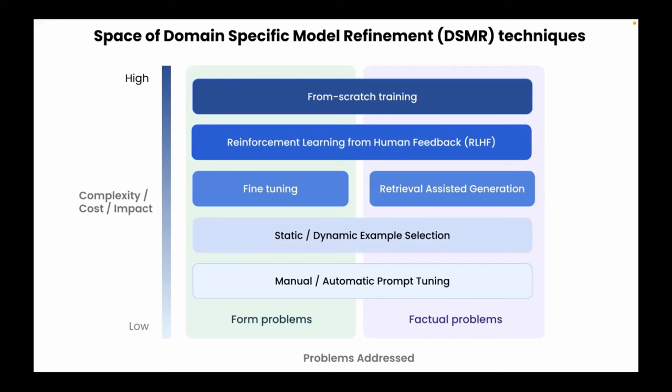As you go higher in complexity, you can use more fancy methods for prompting. People have shown that fine-tuning these large language models usually addresses the style of the language model — for example, it can help you write in a Shakespeare style. But if you want to address factual problems, fine-tuning is usually not the way. Then you should use a technique called RAG, which I'll come to in a moment. One level higher, which is more complex, addresses both form and factual problems — and that is reinforcement learning from human feedback. The hardest and most resource-intensive is pre-training from scratch, which only big labs do today.